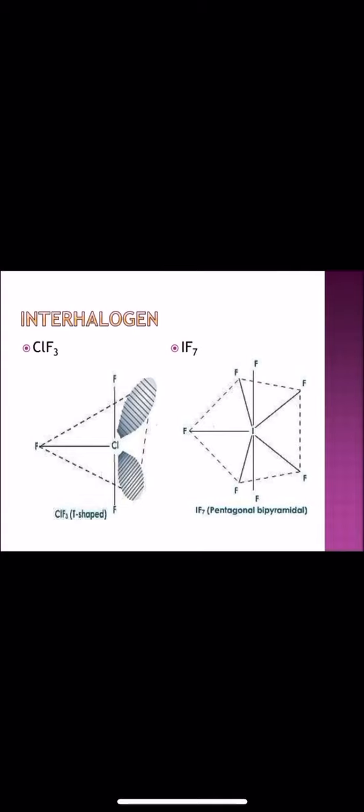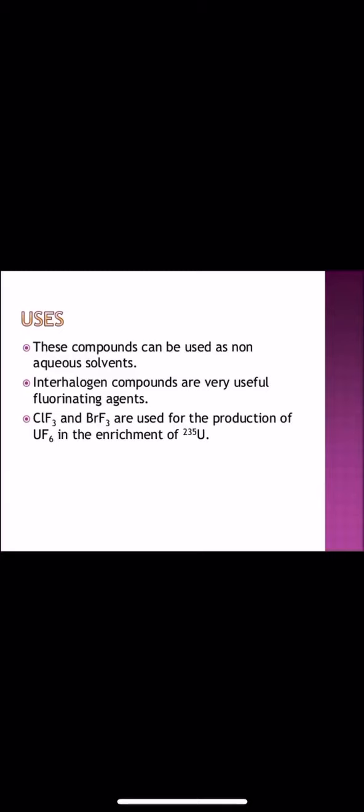These are the important compounds, interhalogen compounds: ClF3, T-shaped, IF7, pentagonal bipyramidal. These interhalogen compounds are used as non-aqueous solvents. Interhalogen compounds are very useful fluorinating agents. So students, this was all about the 17th group. Do the reactions in detail. Okay? Thank you.